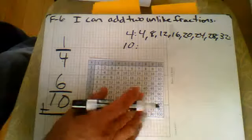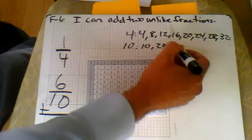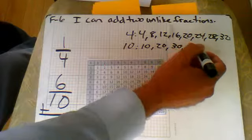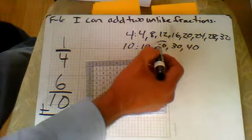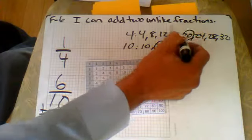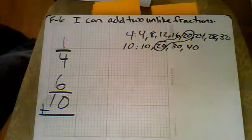Now I'm going to look at my tens: 10, 20, 30, 40. We could keep going out. Here is the least common denominator, or least common multiple, is 20.